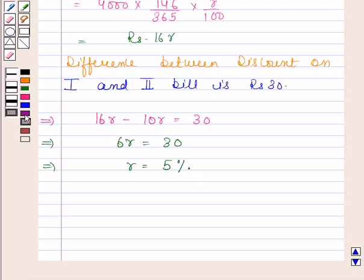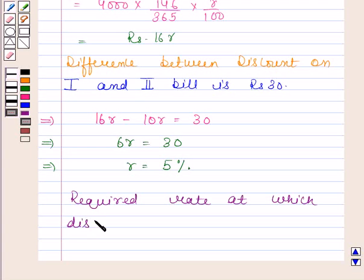So the required rate at which discount is calculated is 5 percent. This is our required answer. This completes the session, bye and thanks.